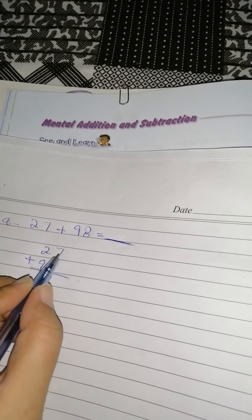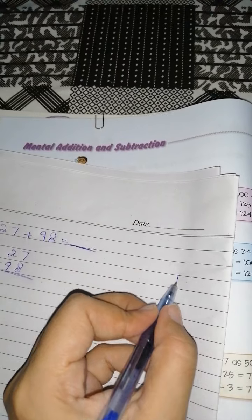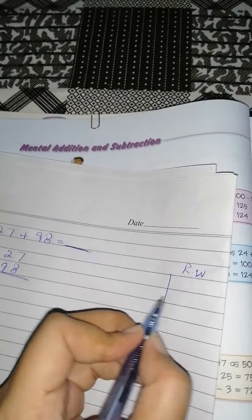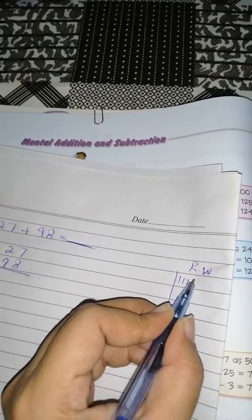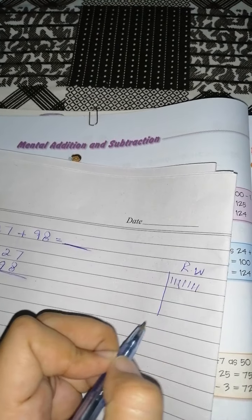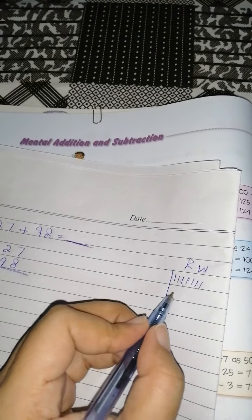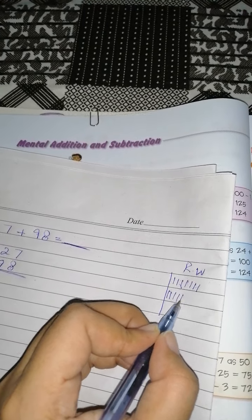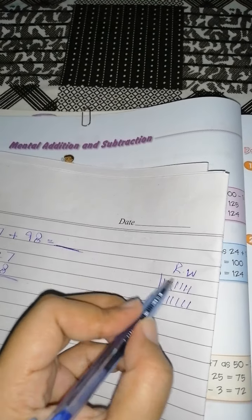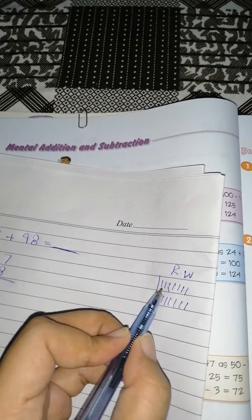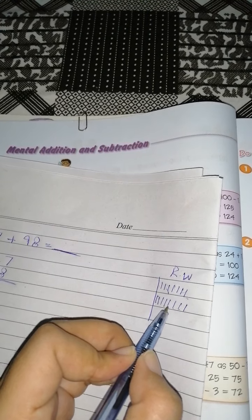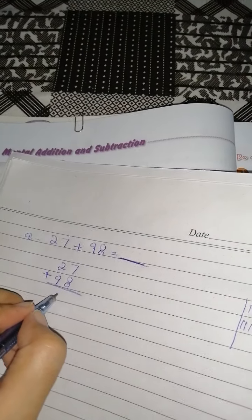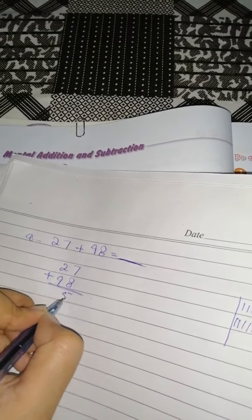اس کے بعد 7 plus 8۔ تو آپ نے rough column بنانا ہے یہاں پر۔ اب آپ کا یہاں کیا ہے 7، تو 7 lines آپ نے: 1, 2, 3, 4, 5, 6, 7 lines آپ نے draw کر دی۔ نیچے کیا ہے 8، آپ نے 8 lines draw کر دی: 1, 2, 3, 4, 5, 6, 7, 8. So یہ اب آپ ان سب کو calculate کر دیجئے تو 7, 8, 9, 10, 11, 12, 13, 14, 15۔